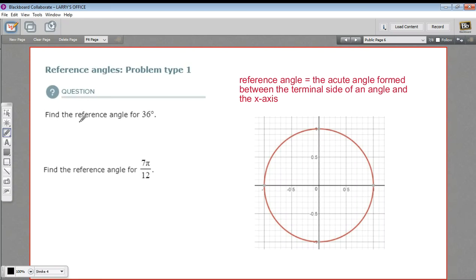In these problems we're looking for something called the reference angle. A reference angle is the angle that's formed by the terminal side of an angle. When we're drawing an angle on a unit circle, we have this side and then the other side, which they call the terminal side.